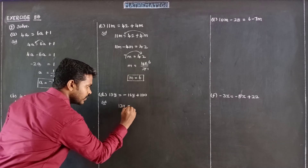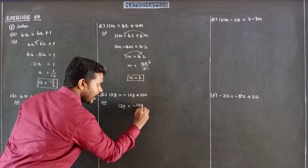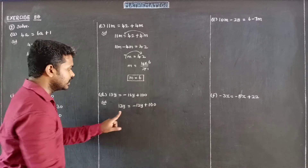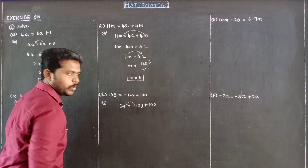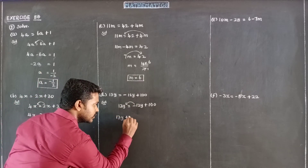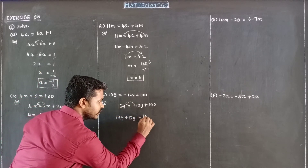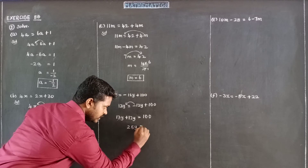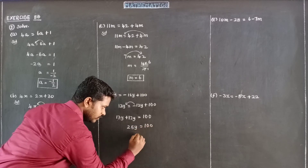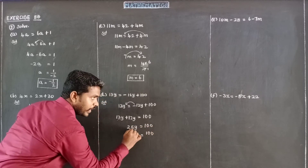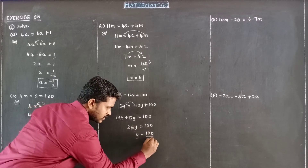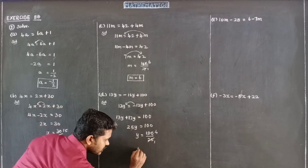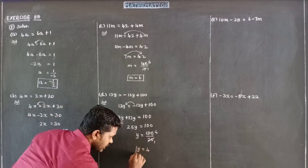Next is subdivision D: 13Y is equal to minus 12Y plus 100. Bringing minus 12Y to the left side: 13Y plus 12Y is equal to 100. That gives 25Y equal to 100. Dividing both sides by 25: 4 times 25 is 100. Therefore the value of Y is 4.